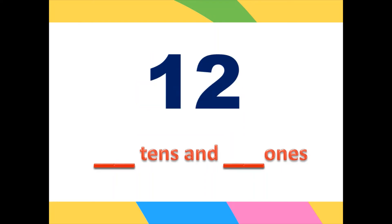Let's proceed. We have the number 12. Which digit is tens and which is ones? How many tens are there and how many ones? Very good — there is one ten and two ones. That is why we have 12.